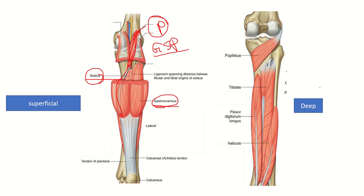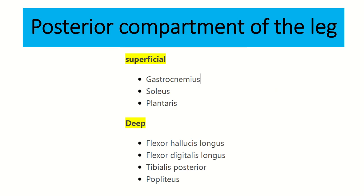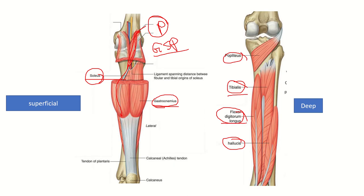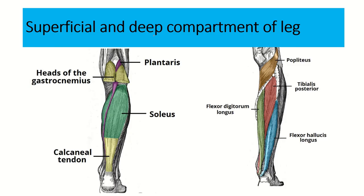The deep muscles of the posterior compartment are tibialis posterior, flexor digitorum longus, flexor hallucis longus, and popliteus — three superficial plus four deep gives seven total. Here in this picture we can see the plantaris, the two heads of the gastrocnemius, soleus as the superficial group, and the four deep muscles: popliteus, tibialis posterior, flexor hallucis longus, and flexor digitorum longus.